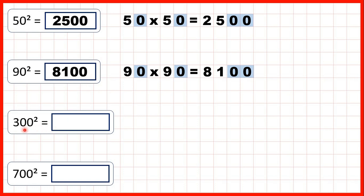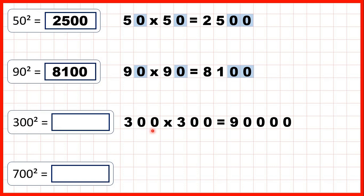Now we have 300 squared, so that's 300 times 300. That's 90,000, because 3 times 3 is 9, but here we have a total of four end zeros in our question — two here and two here. So we need a total of four end zeros in our answer.